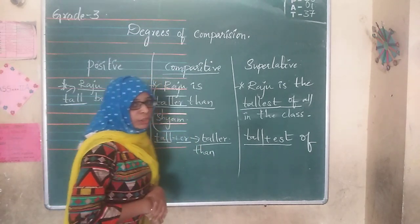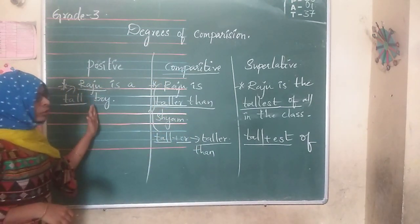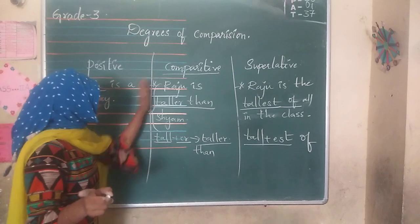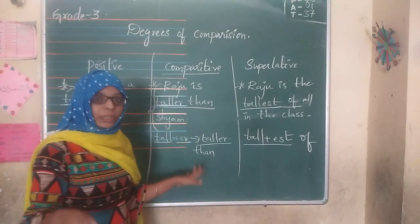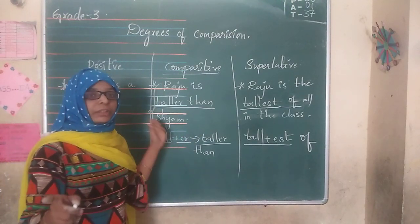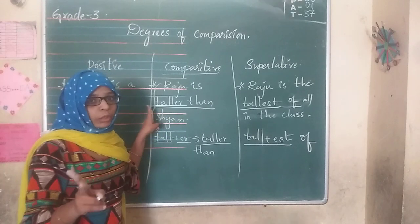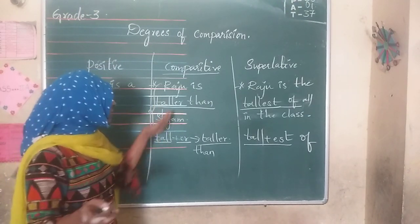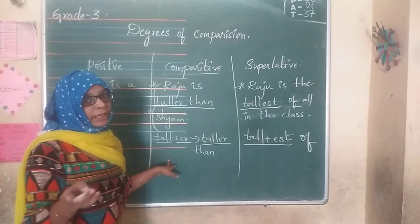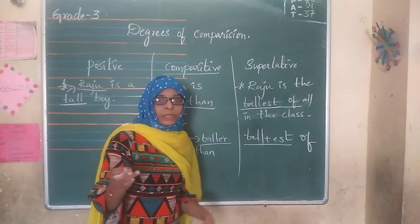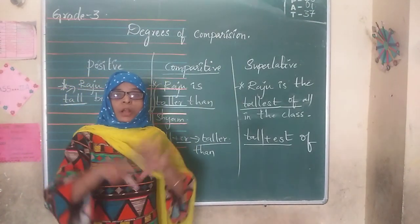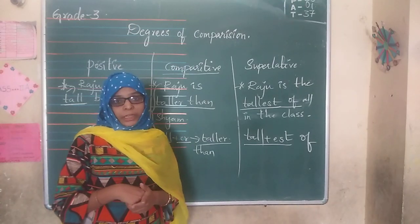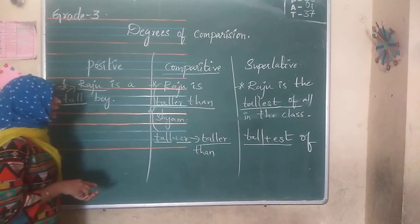So to summarize: positive degree is when we talk about only one person, one thing, or one place. Comparative degree is when the comparison is between two persons, two places, two things, or two animals. Superlative degree is when the comparison is among more than two people, places, or things. Let us take one more example.